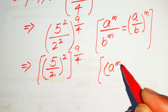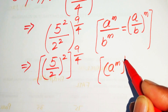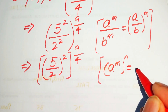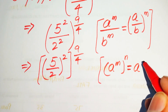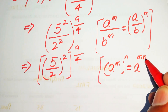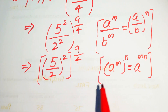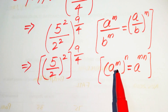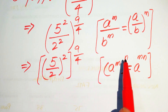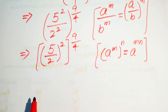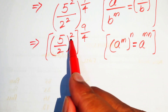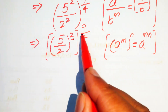The next law states: if we have a to the power of m, to the power of n, it is written as a to the power of m times n. This means if you have an exponent raised to an exponent, these two exponents are multiplied by each other.